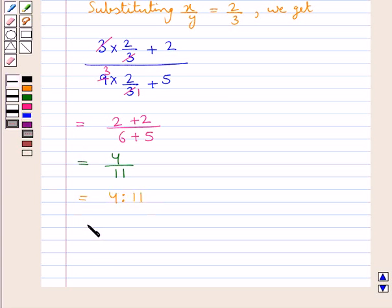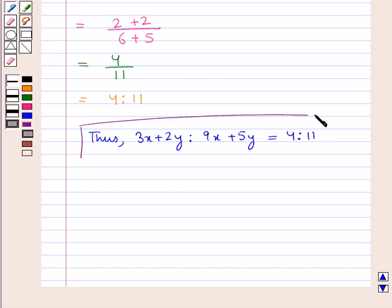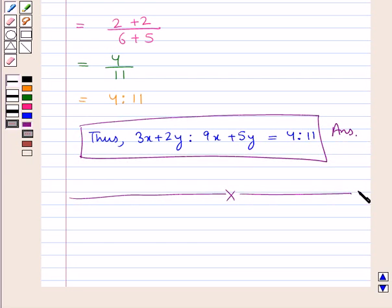Thus we have the ratio 3x plus 2y is to 9x plus 5y is equal to 4 is to 11. This is our final answer. This completes the session. Hope you have understood the solution for this question.